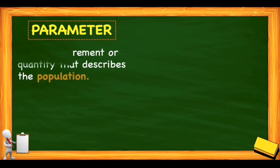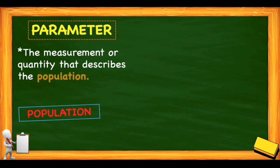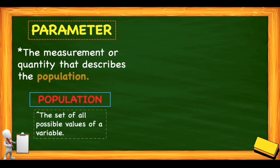Parameter is the measurement or quantity that describes the population. So, what is population? Population is the set of all possible values of a variable. In short, it refers to the total or entire respondents of the data.